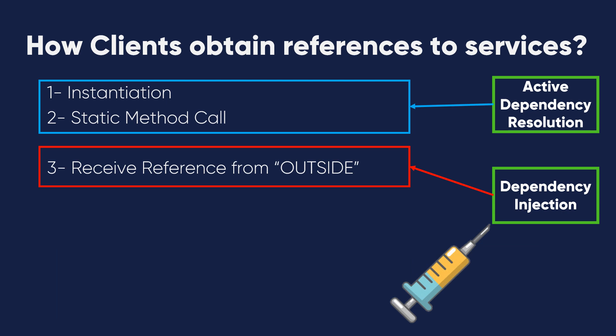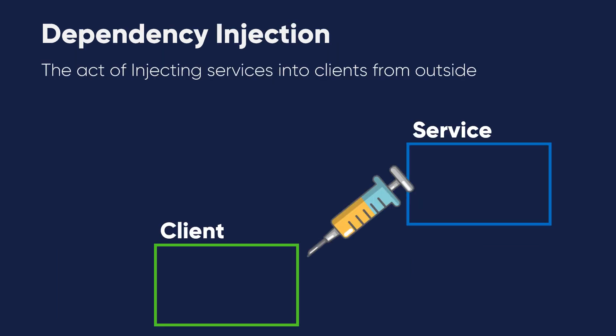I will separate the first two methods into active dependency resolution, which is instantiation and static method call. The third one, which we are going to work on throughout the course, is making dependency injection by receiving a reference from outside.